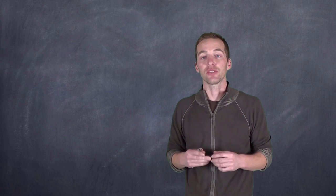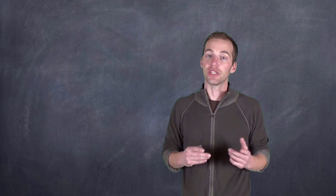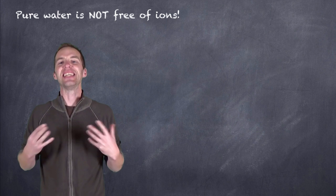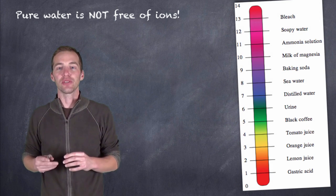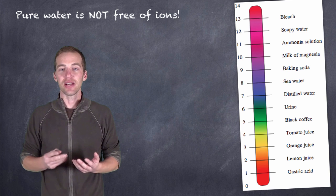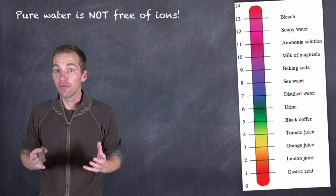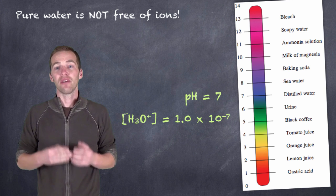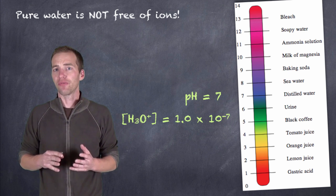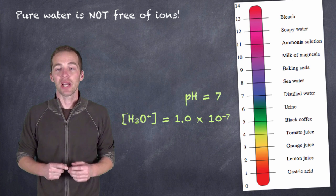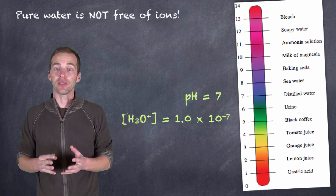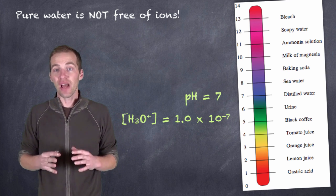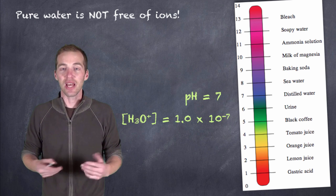To better understand the relationship between pH, pOH, and ion concentrations, consider this important concept: pure water is not free of ions. Even deionized water still contains ions because water itself undergoes auto-ionization. Water has a pH of 7, and since pH is the negative log of the hydronium or hydrogen ion concentration, that means hydrogen ions and hydronium ions are present in water. In fact, water has a hydronium ion concentration of 1 times 10 to the negative 7.